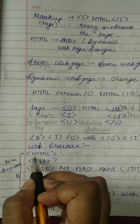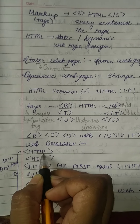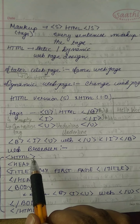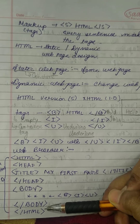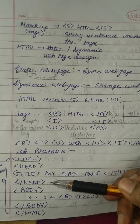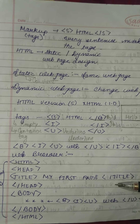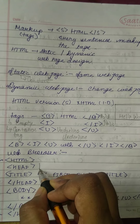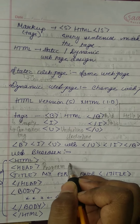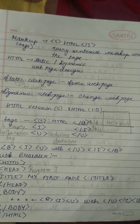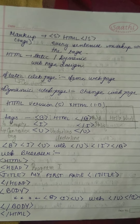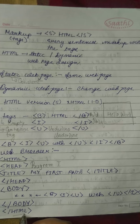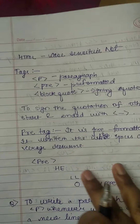First we write the HTML tag, then the header tag, then the head and title tags. Inside the title we are giving 'My First Page' because it is our first page — we can give any title we want. Then we close the head tag. In the body, we are applying bold, and inside bold we are writing 'Web,' which will also be underlined and in italic format. Then we close the body tag and the HTML tag.